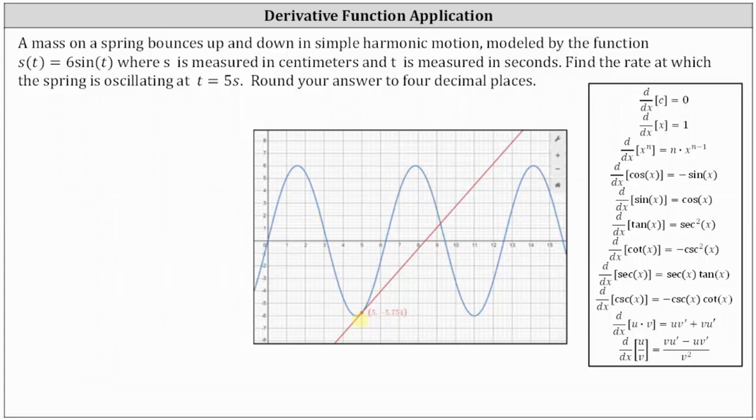The velocity function is equal to the derivative of the position function s(t). So s'(t) is equal to the velocity function, which is equal to the derivative of 6sin(t), which is 6cos(t).